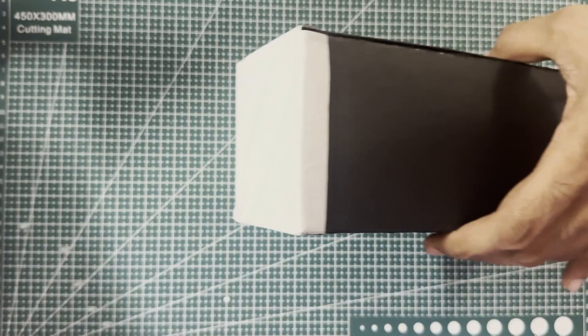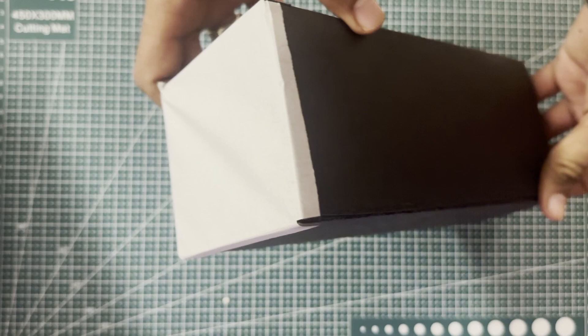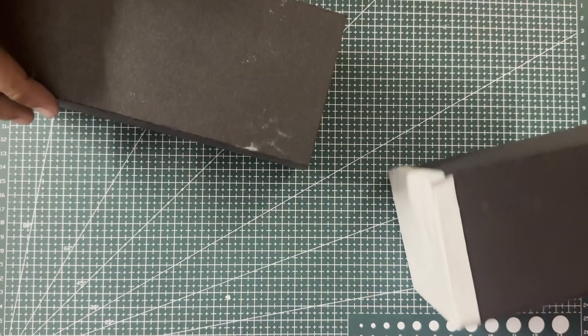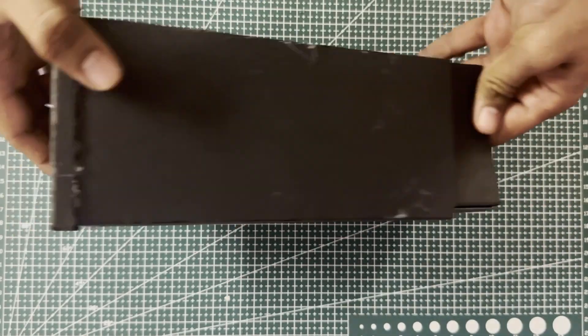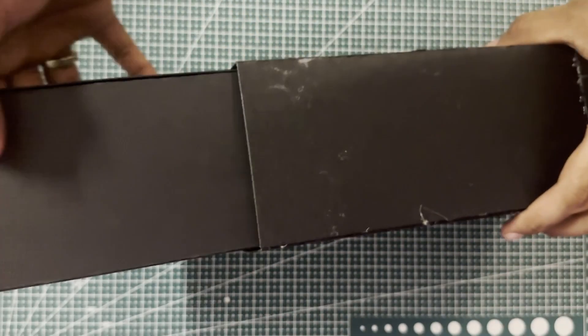Then we have the inner box, and that white part is the screen where the image forms. We just slide the inner box inside the outer one and the pinhole is ready.